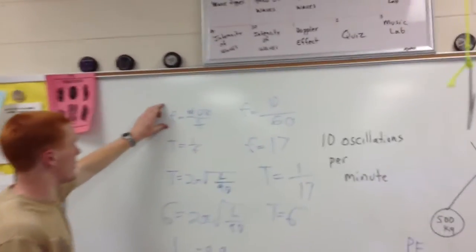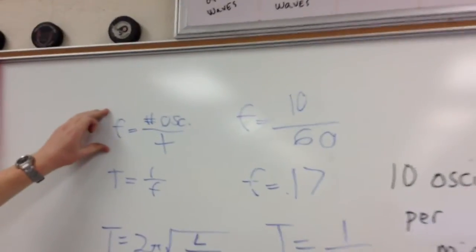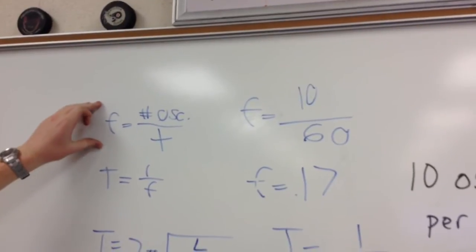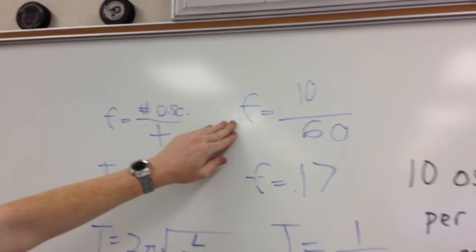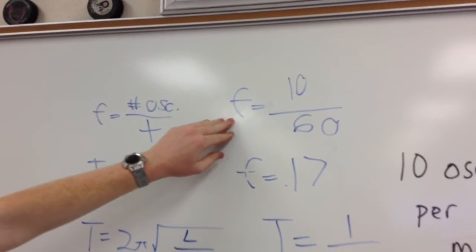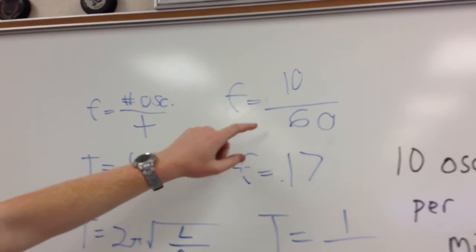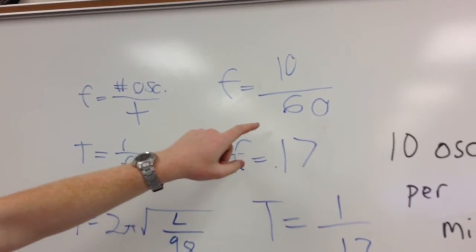Right now we're going to use this formula, frequency equals number of oscillations over time, to find the period. So we have f, which is what we're trying to find, number of oscillations being 10, and time equals 60 because we're finding it in a minute.